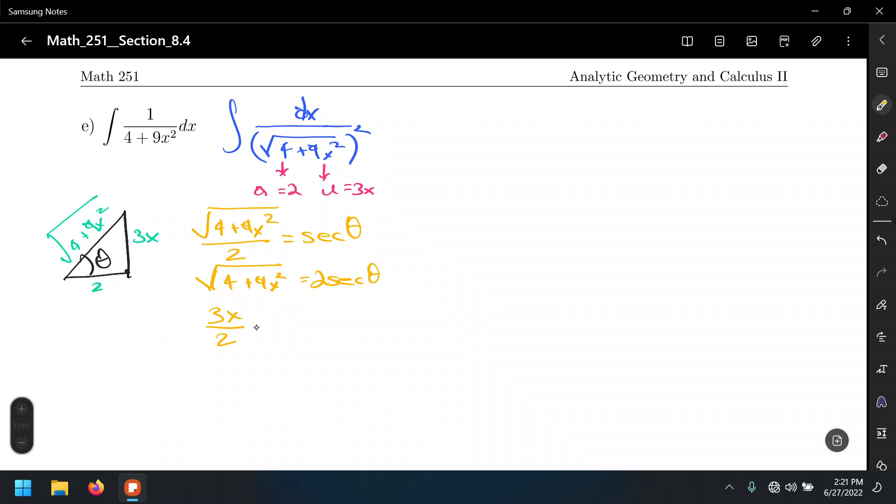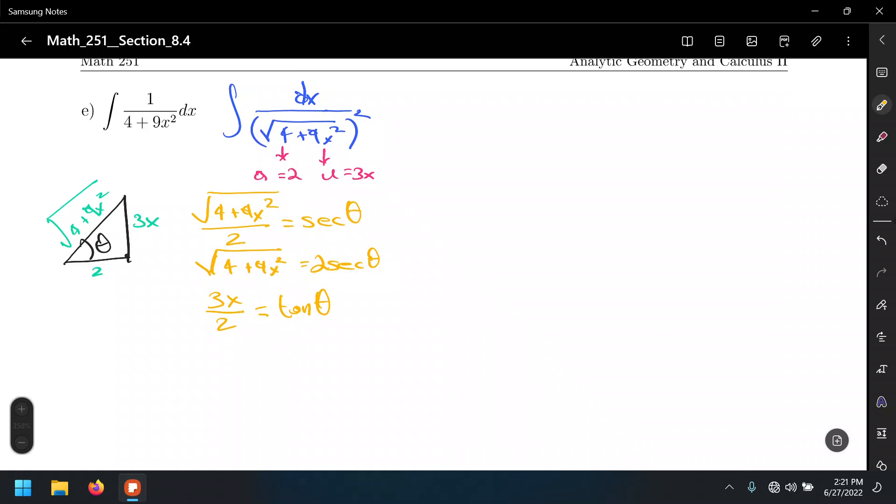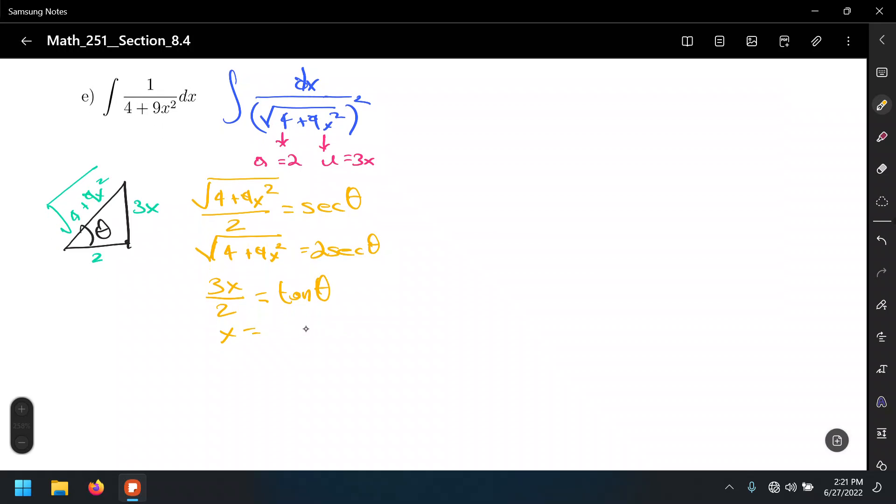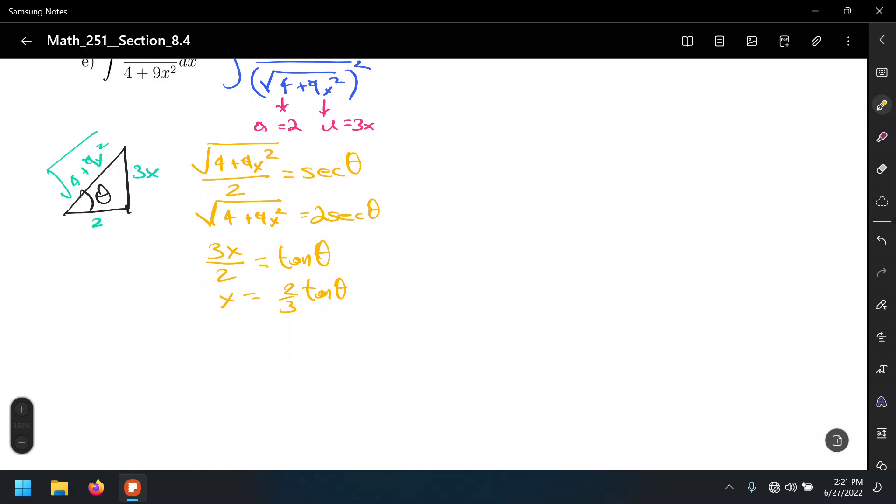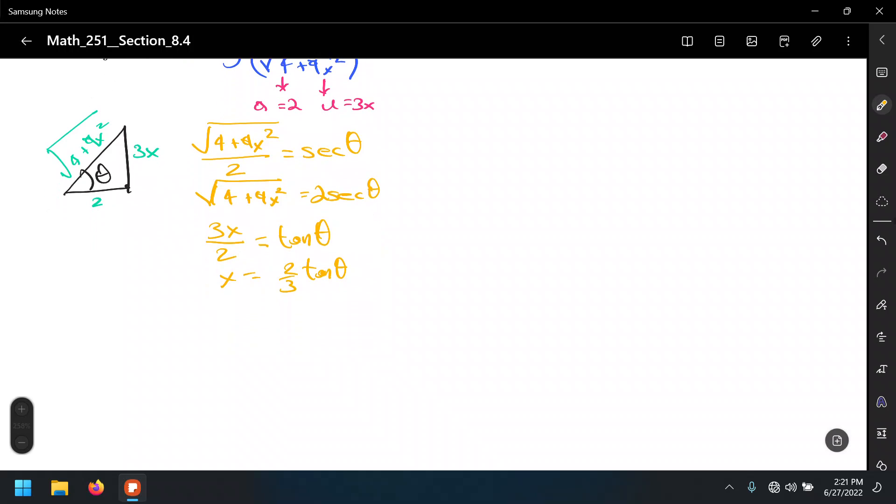And what is that trigonometric function that relates those two? Tangent. All right, so let's solve for x. Two-thirds tangent theta, and dx equals two-thirds secant squared theta dθ.